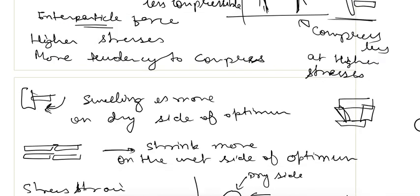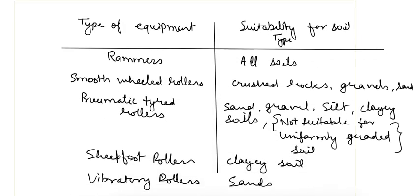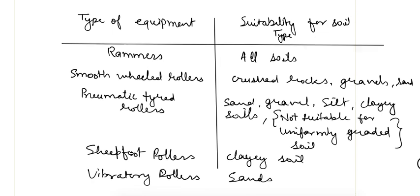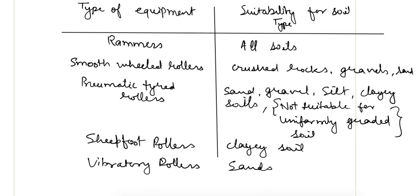Now for compaction equipment: rammers can be used for all soils but are not suitable for large projects. Smooth field rollers can be used for crushed rocks, gravels, and sands. Pneumatic tired rollers are used for all soils — sand, gravel, silt, and clay — but they are not suitable for uniformly graded soils.